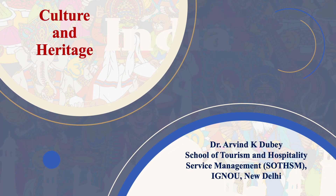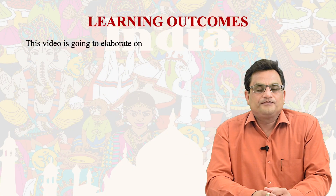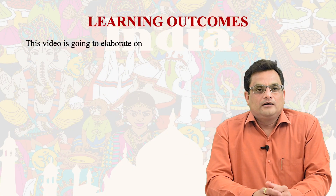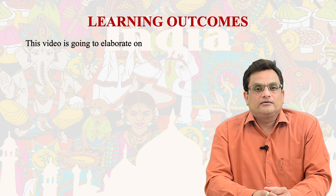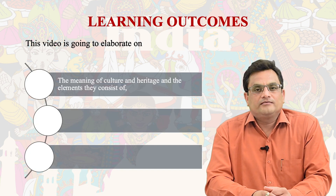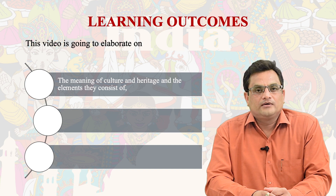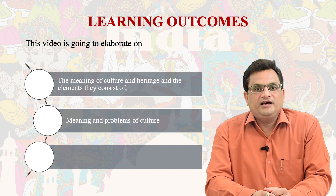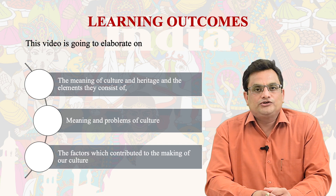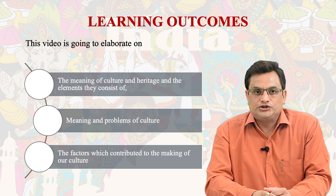This is the course name. It is an 8 credit course and the first video we are going to record is related to culture and heritage, whose objectives are: this video is going to elaborate on the meaning of culture and heritage and the elements they consist of.